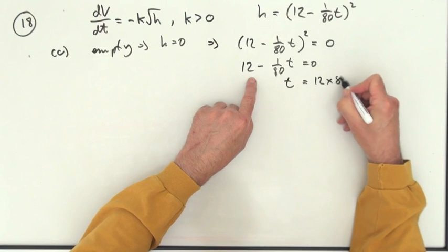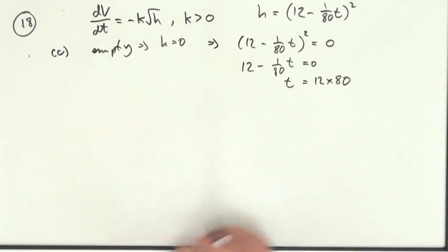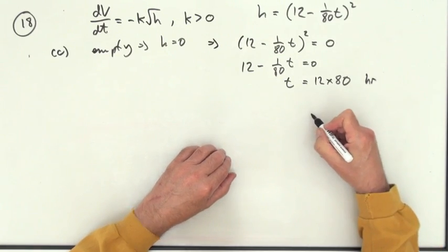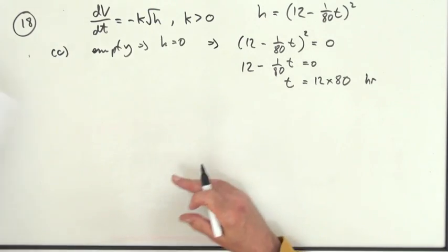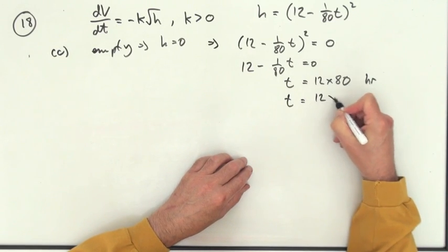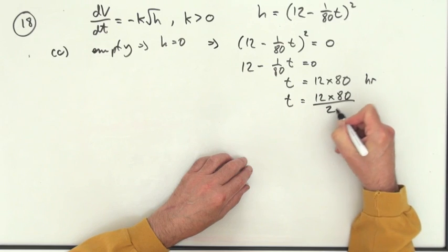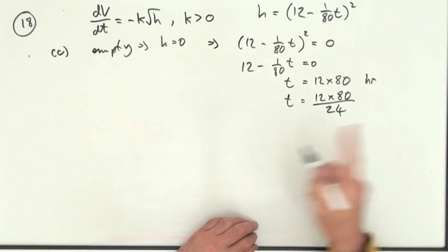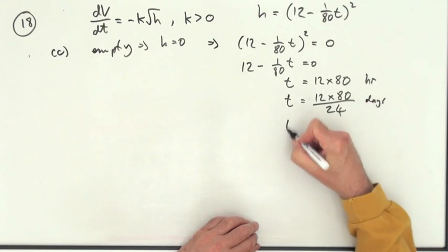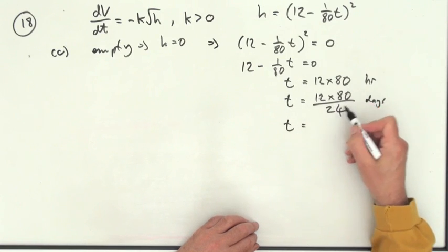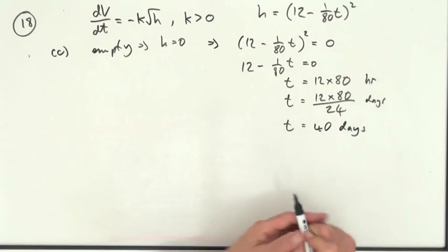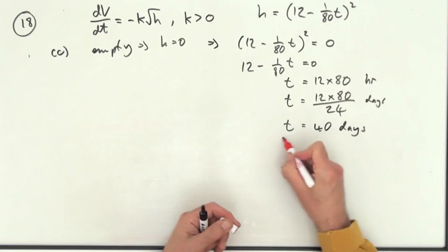But T is in hours. That's the number of hours. And the question said, how many days? So that means T will be 12 times 80 divided by 24, because there's 24 hours in a day. That's days now. That's a wee bit of cancelling. That goes 2, that goes 4, 40 days. That's a very biblical tank, that one.